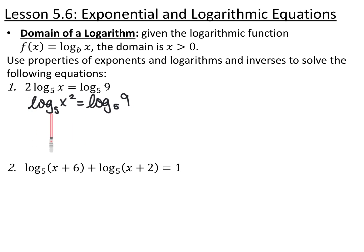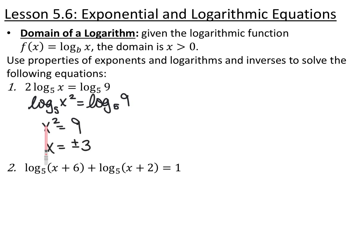Since the same thing is being done to both x squared and 9 and they're equal to each other, x squared must equal 9. Taking the square root of both sides gives plus or minus 3. But because of our domain issue, we do need to check these by plugging them into the original equation and making sure whatever you get is strictly greater than zero. Plugging in 3 gives log base 5 of 3, which is greater than 0, so it's fine.